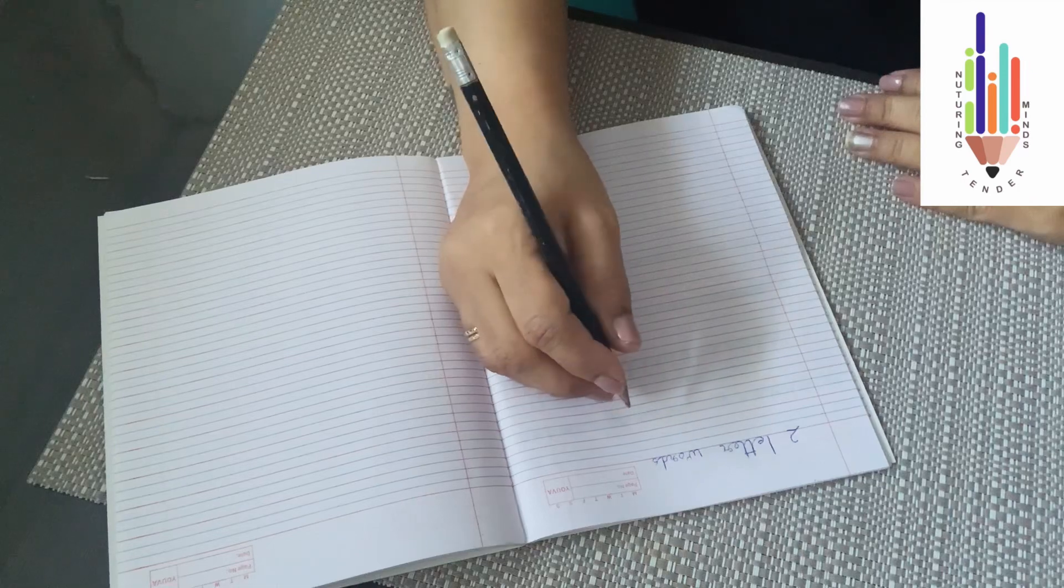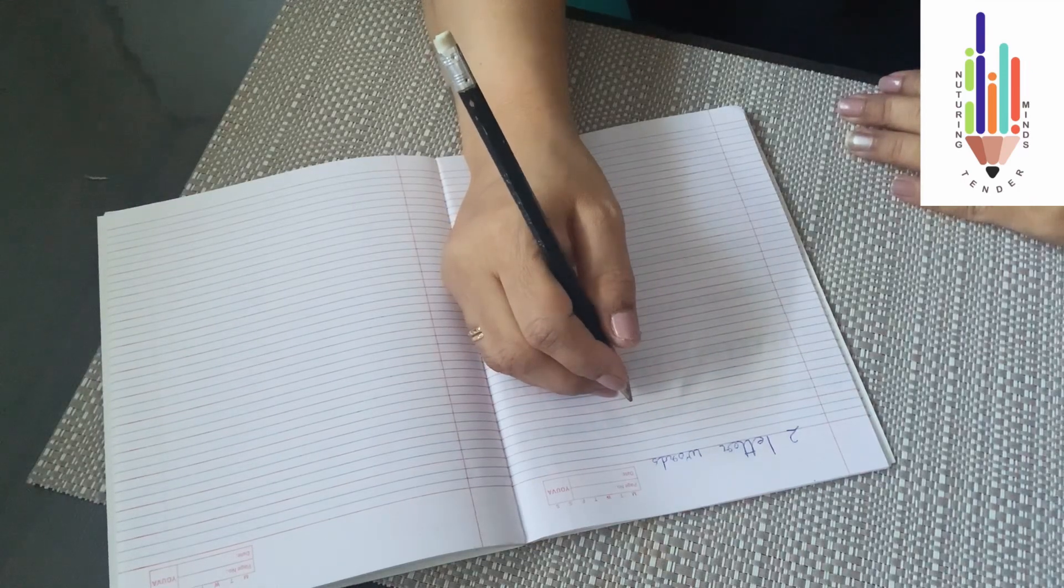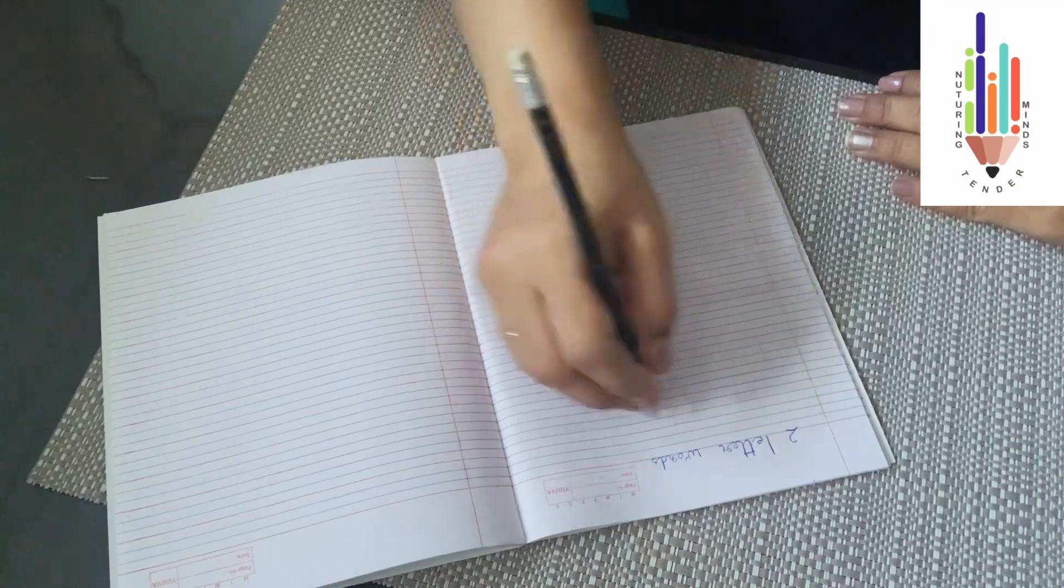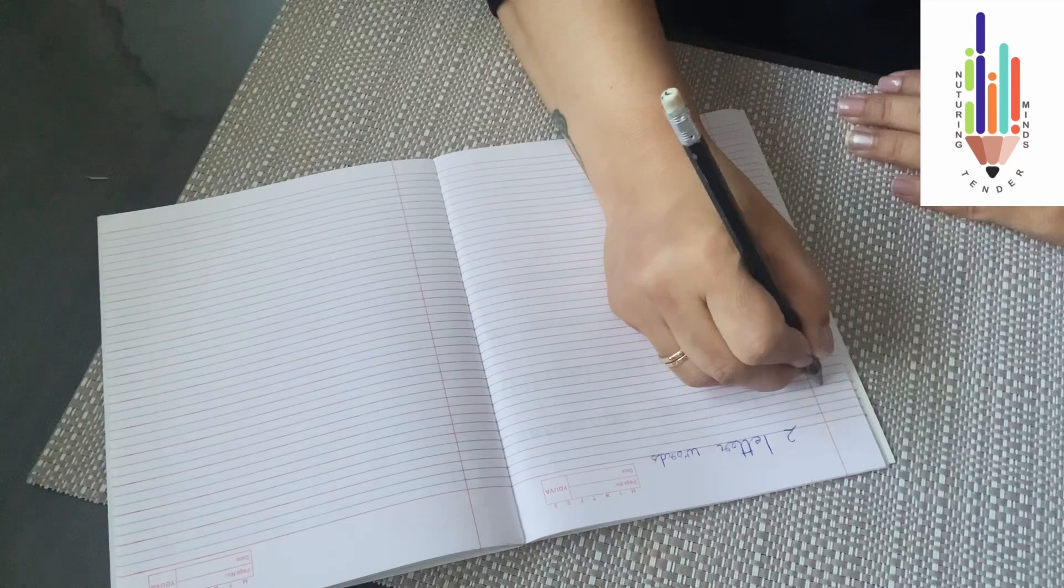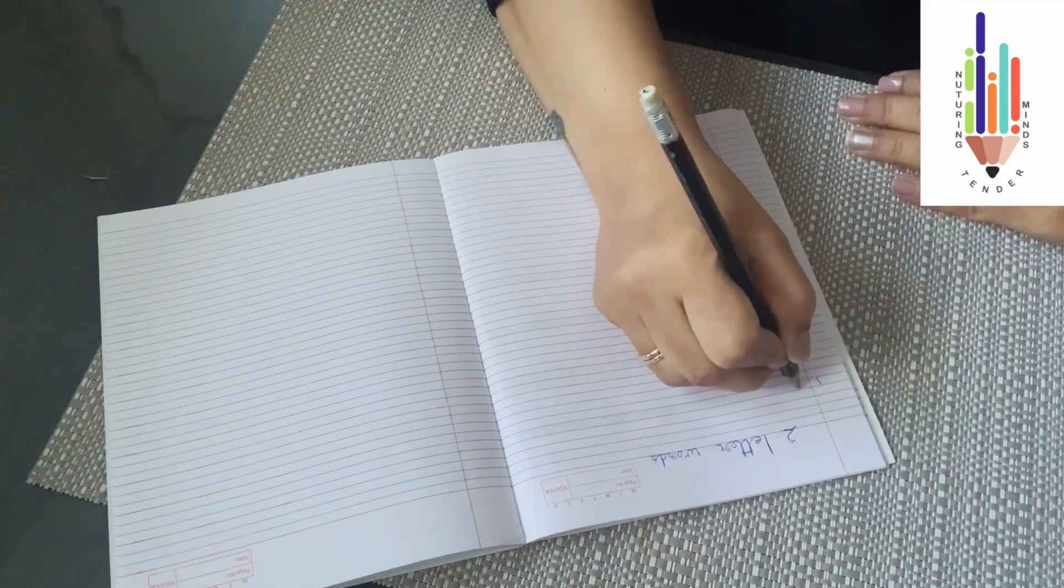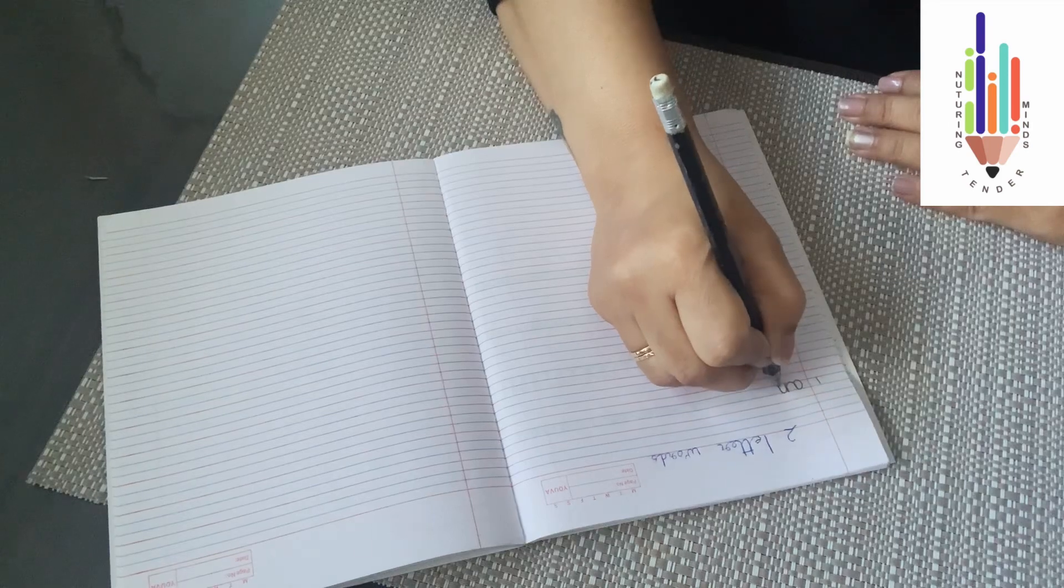So children, let's learn our two-letter words, how to join with cursive letters. Here is the first line. A M.